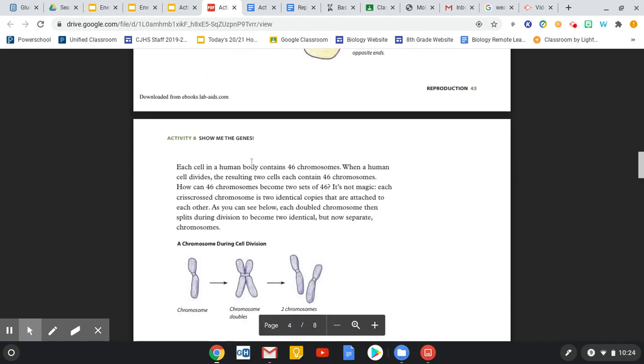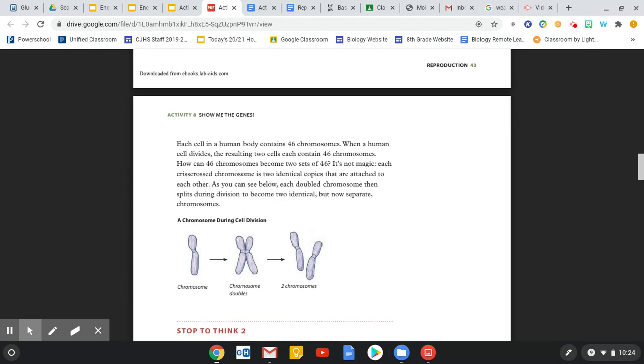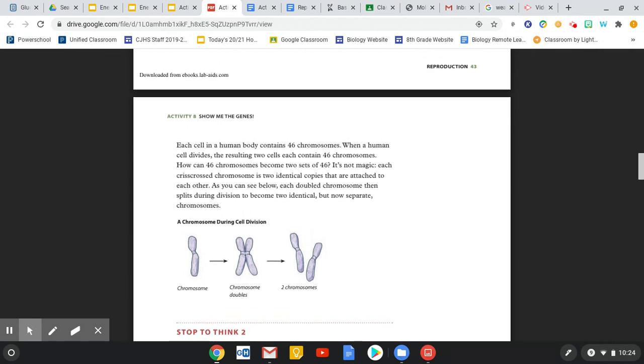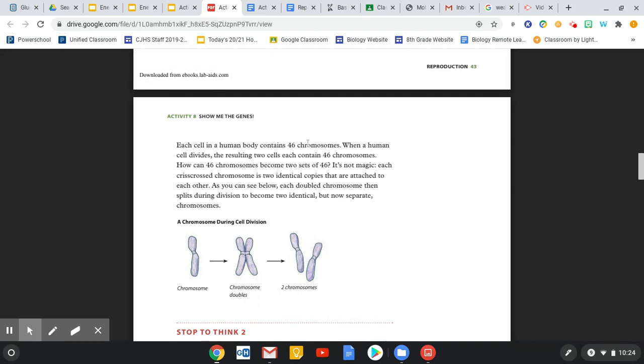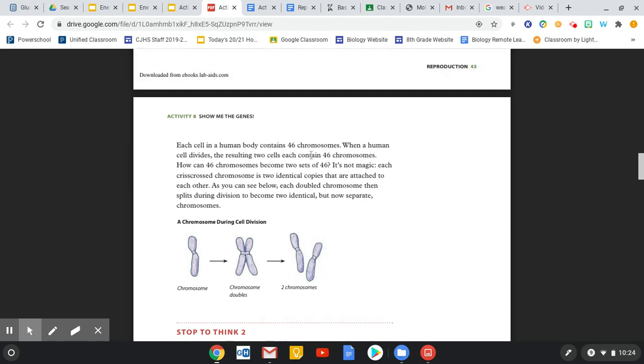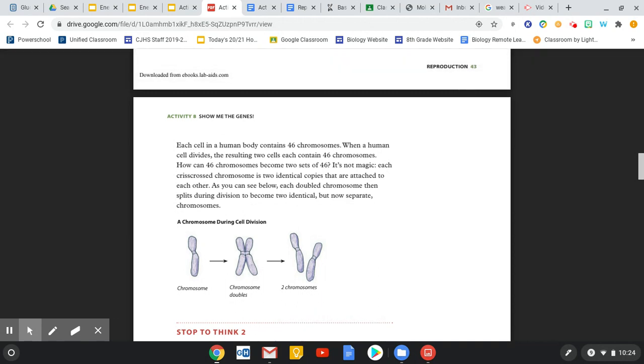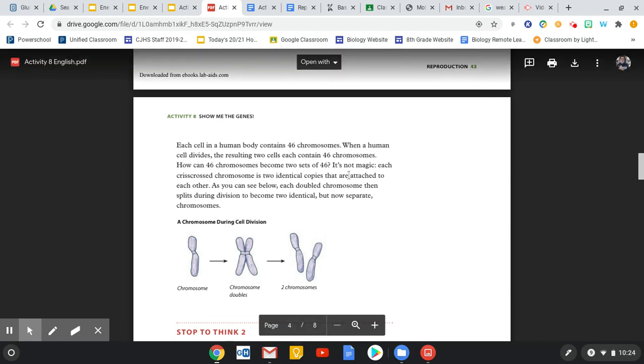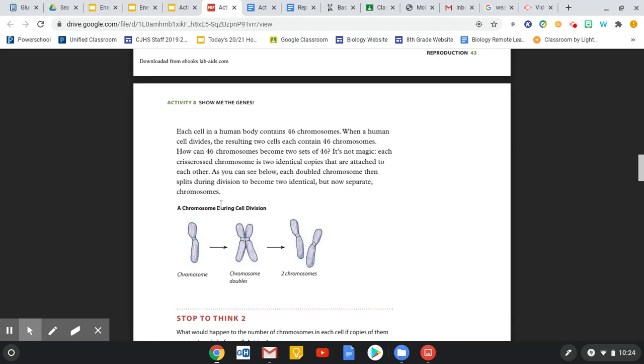Each cell in a human body contains 46 chromosomes. So your skin cells, your liver cells, your ocular cells, which are in your eye, like your cones and your rods. When a human cell divides, the resulting two cells each contain 46. Well, how can 46 chromosomes become two sets of 46? It's not magic. Each crisscross chromosome is two identical copies that are attached. As you can see below, each double chromosome then splits during division.